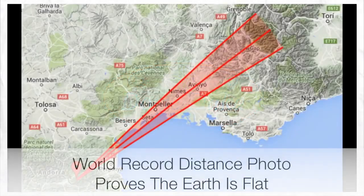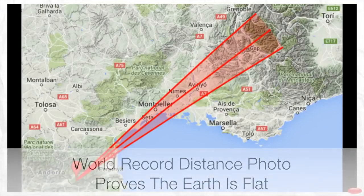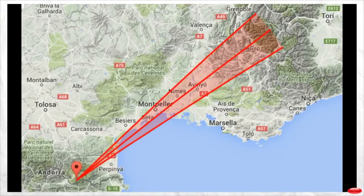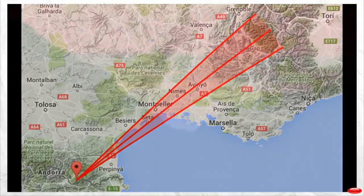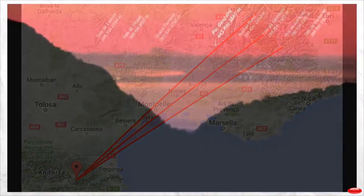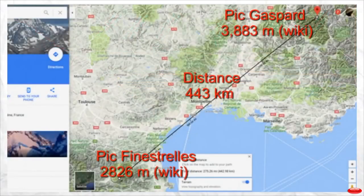This is a study of the current world record of distant landscape photography. It was taken in France from Peak Finestrel to Peak Gaspard, a total distance of 443 kilometers. Here is the picture, and here is a screenshot of Google Maps showing the two mountains and the distance.